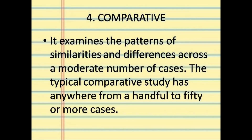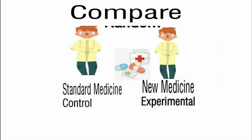Next is comparative. It examines the patterns of similarities and differences across a moderate number of cases — typically anywhere from a handful to 15 or more cases. In our sample, we compare the experimental and control groups. Unlike true experimental where we focused on the result after one month for the new medicine group alone, in comparative research we compare the results of both the standard medicine and the new medicine groups. Participants must share similarities — for example, they are all patients with a mental disability.